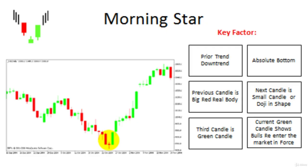The first pattern we discuss in detail is the morning star. As the candlestick formation shows on your screen, you see three candles. One candle is a red real body candle. The next candle is a small green or red color candle, which may also become a doji or look like a doji, and the third candle is a big green real body candle.